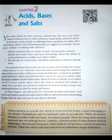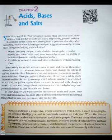Washing soda: Another chemical that can be obtained from sodium chloride is Na₂CO₃·10H₂O (washing soda). Sodium carbonate can be obtained by heating baking soda. Recrystallization of sodium carbonate gives washing soda. Na₂CO₃ + 10H₂O → Na₂CO₃·10H₂O. Sodium carbonate and sodium hydrogen carbonate are useful chemicals for many industrial processes. Washing soda is used in glass, soap, and paper industries, in the manufacture of sodium compounds such as borax, as a cleaning agent for domestic purposes, and for removing permanent hardness of water.